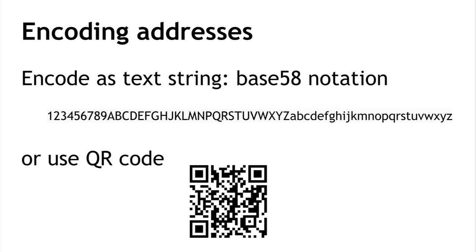The second method for encoding a Bitcoin address is as a QR code — a simple 2D barcode. You can point your phone at this, take a picture, and your phone can scan it and recover the bits of the address. This is the sort of thing you might use in a store or for phone-to-phone communication. My phone might display a barcode which is my address, and your phone might take a picture of it to get the address. This down here actually is an active address, and if you'd like to give me some Bitcoins, feel free to do so.